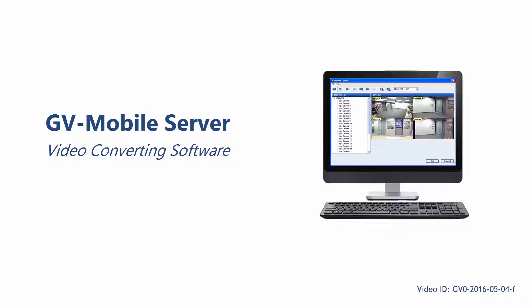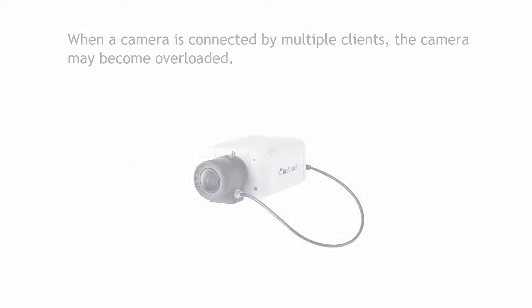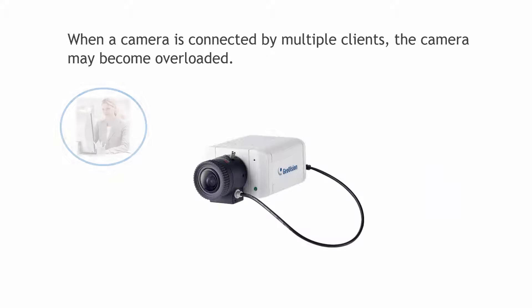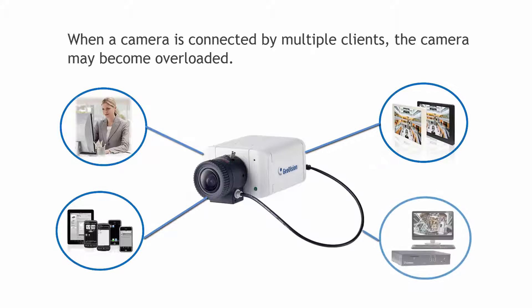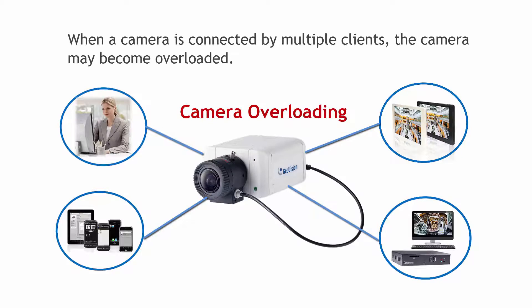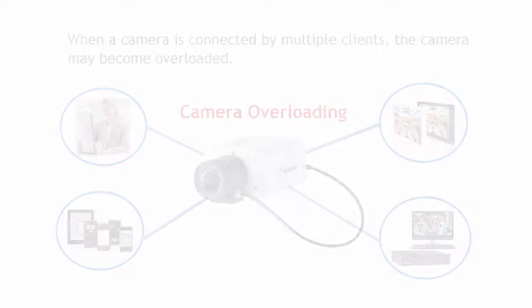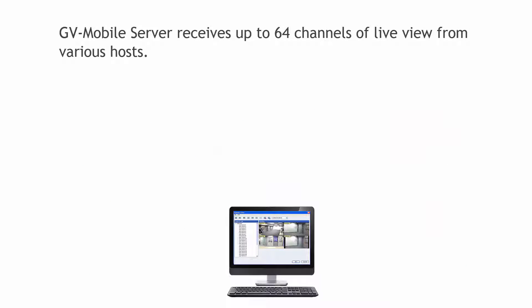GV Mobile Server is the video converting software designed to reduce the CPU loading of IP video devices. When a camera is connected by multiple clients, the cameras may become overloaded due to over consumption of the bandwidth and high CPU loading. This is when GV Mobile Server comes into play.